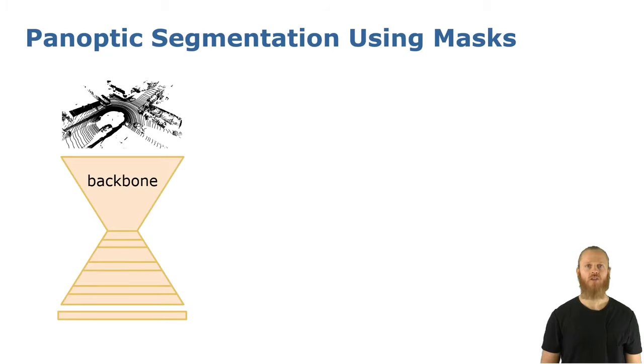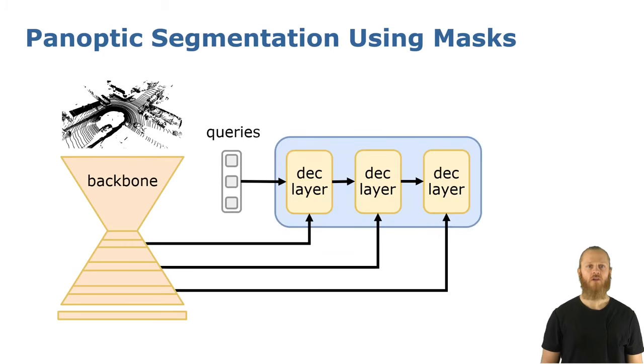To segment the scan, we first extract multi-scale point features using an encoder-decoder architecture. We also use learnable queries as mask proposals that we refine in a transformer decoder through self-attention and cross-attention, combining this way the queries with the point features we extracted before.